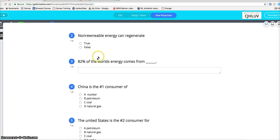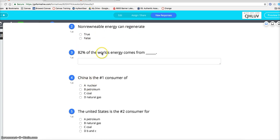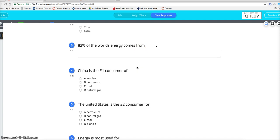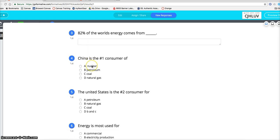That's true, right? This non-renewable energy can regenerate is true. It just takes a really long time. So 82% of energy comes from non-renewable, or 82% of world's energy use comes from. China is the number one consumer of coal. And who's the number one consumer of petroleum? Us, and we're the number two for coal and natural gas.